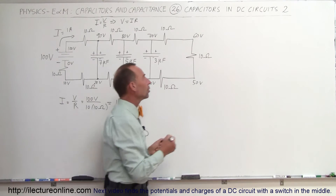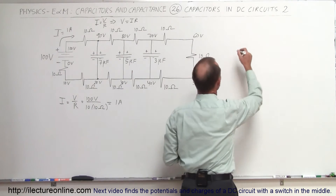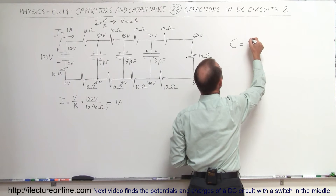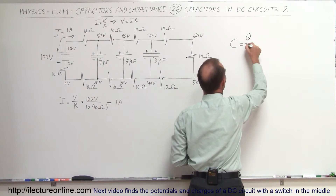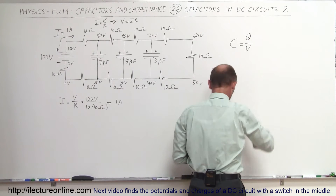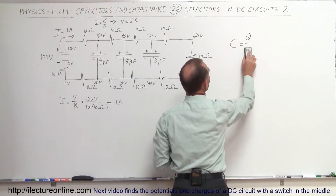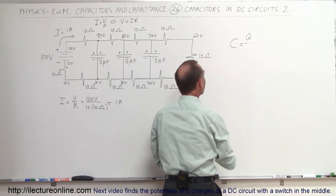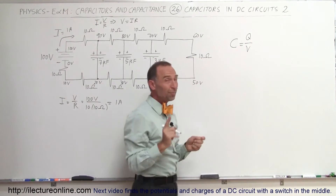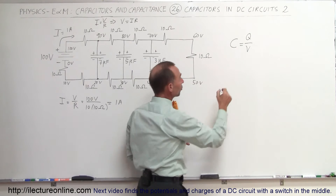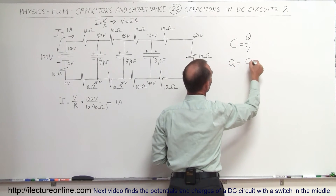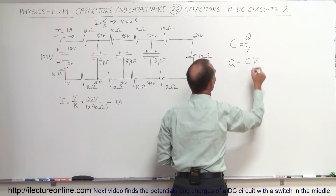Now using the equations of capacitance, we know that the capacitance of a capacitor is equal to the charge on the capacitor divided by the voltage that pushes that charge on there — Q equals C times V — which means that the charge on a capacitor is simply equal to the product of the capacitance times the voltage.